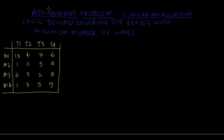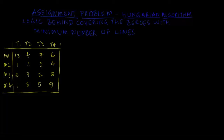Hi, today I will demonstrate the logic behind covering the zeros with minimum number of lines while solving the assignment problem using the Hungarian algorithm. First I will solve it by covering the zeros with minimum number of lines and then explain the logic. In solving the assignment problem we first take the minimum of each row and deduct all the numbers including itself in order to generate as many zeros as possible.